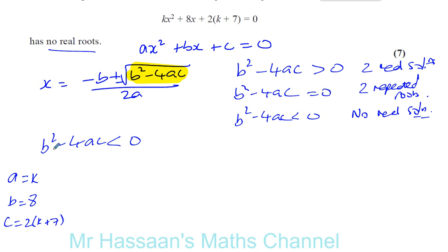So now if we just set this up now, b squared is 8 squared minus 4 times k times 2k plus 14. I'll just simplify that, it's 2k plus 14. And that has to be less than 0.